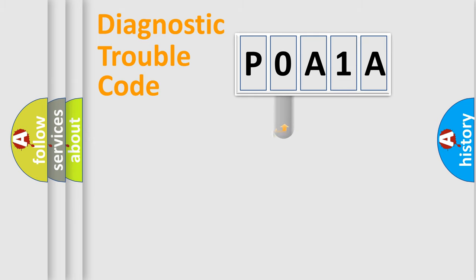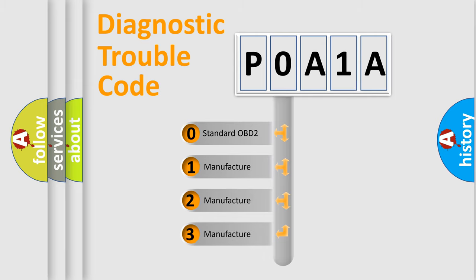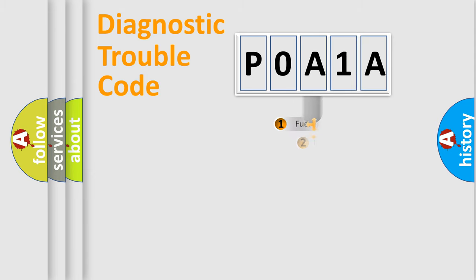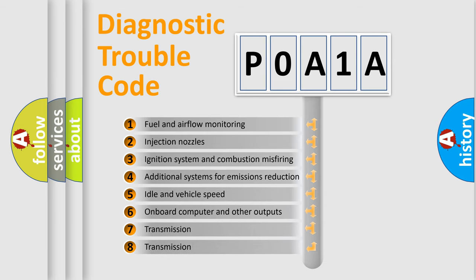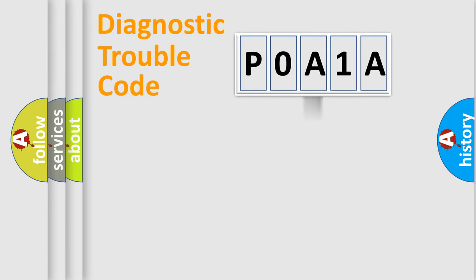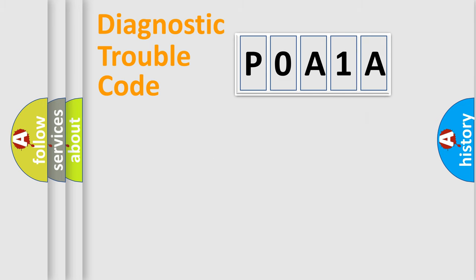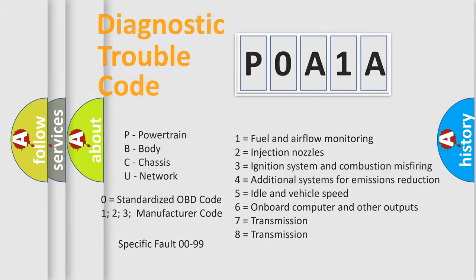This distribution is defined in the first character of the code. If the second character is expressed as zero, it is a standardized error. In the case of numbers 1, 2, or 3, it is a more manufacturer-specific expression of a car-specific error. The third character specifies a subset of errors. Only the last two characters define the specific fault of the group, and this division is valid only when the second character is zero.